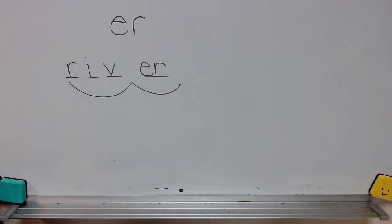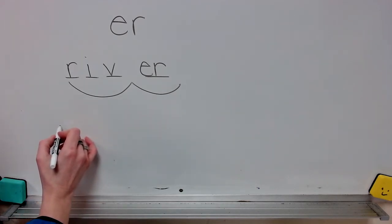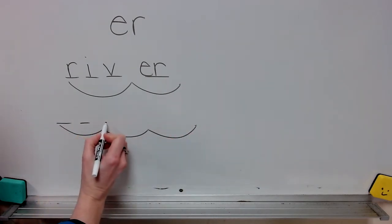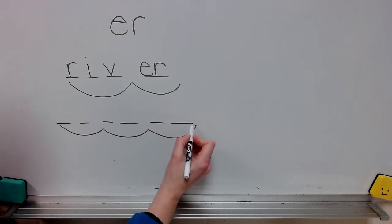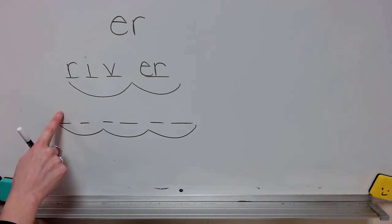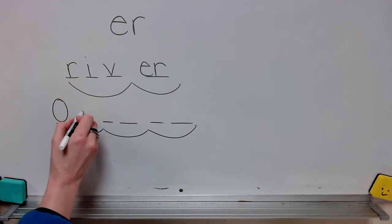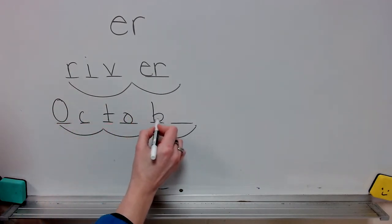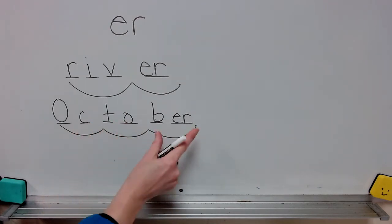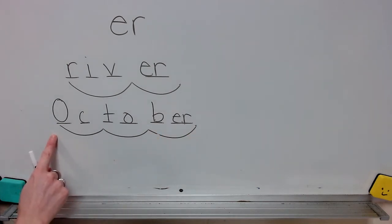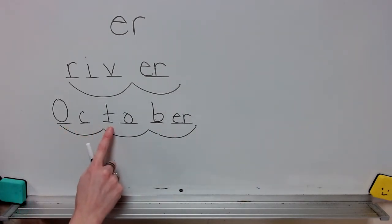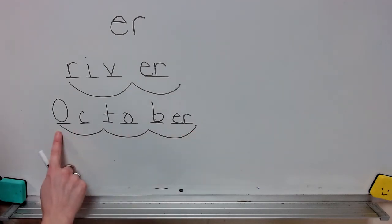The next word is October. What word? Let's stretch those syllables: Oc-to-ber. Write the spelling for October. Remember, this is a month so it needs to be capitalized. Closed syllable, open syllable, and a syllable with vowel R. Check it and correct it. What word? Spell October. Word. October.